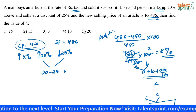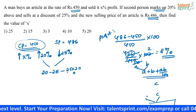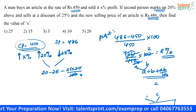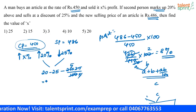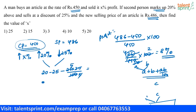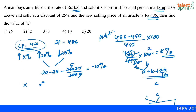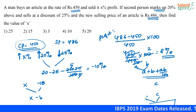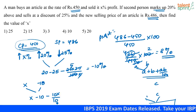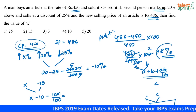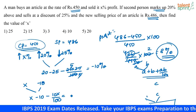Applying the formula: 20 minus 25 minus (25 into 20 by 100), that gives 20 minus 25 minus 5, which equals minus 10 percentage. So the effective percentage of a 20 percentage increase and a 25 percentage decrease is minus 10 percentage. Now the two remaining percentages are x and minus 10, giving effective percentage: x minus 10 minus (10x by 100). We know the net effective percentage is 8 percentage.